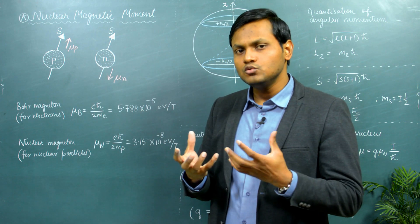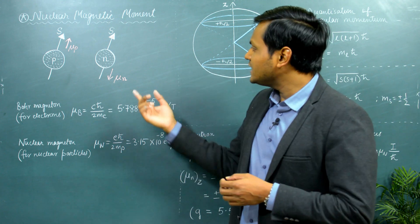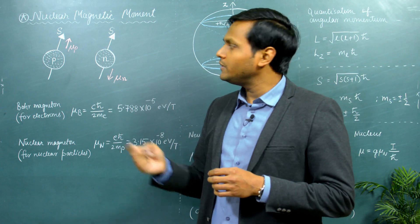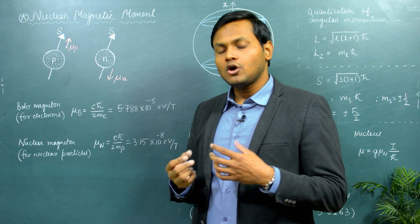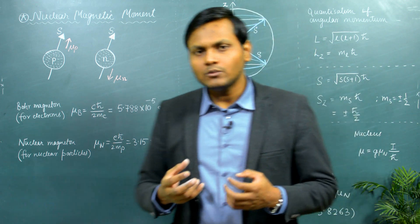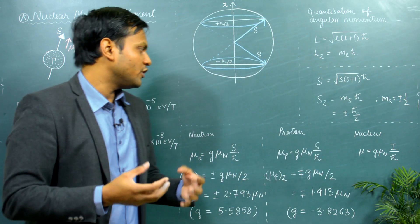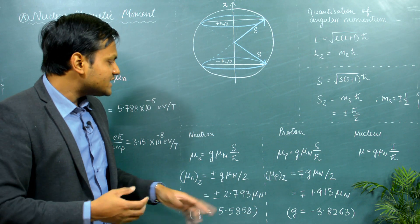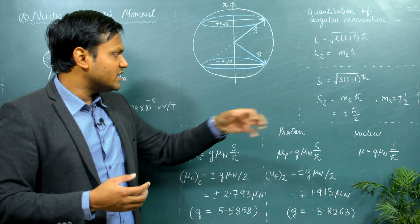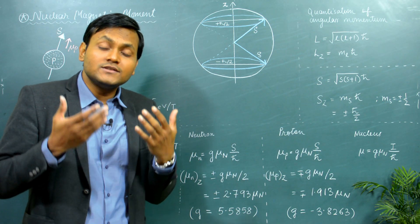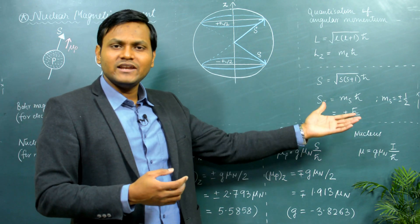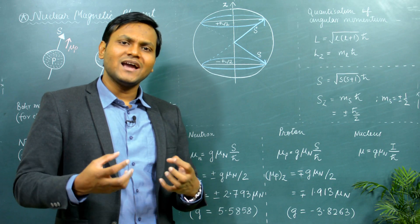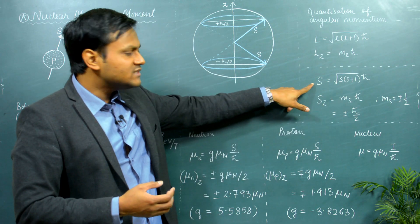The neutron has some kind of spin angular momentum associated with it, and the neutron is further made up of smaller particles which have a charge of their own. Therefore there is a charge distribution inside the volume of the neutron, and that effectively leads to the neutron having a magnetic moment. However, in the case of the neutron, the magnetic moment is in the direction opposite to the spin angular momentum, and in the case of a proton, the magnetic moment is in the direction of the spin angular momentum itself.